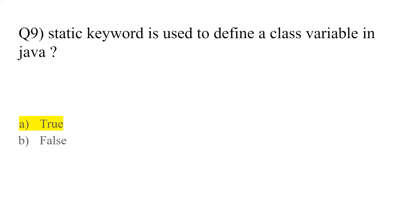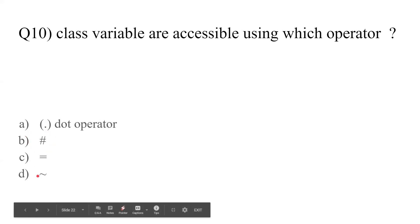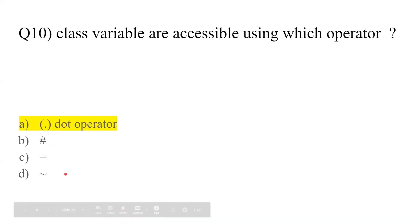Question number ten: class variables are accessible using which operator — dot operator, hash, or equal to? The answer is A, the dot operator. The dot operator is used to access class variables.